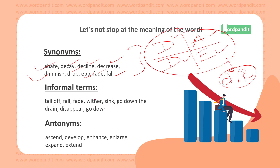The informal terms you can use for dwindle are: tail off, fall, fade, wither, sink, go down the drain. 'Go down the drain' is a good idiom to learn — when something goes down the drain, it means it gets wasted or reduced. Generally we use it to imply something's been wasted, so if your opportunity has gone down the drain, you've wasted the opportunity.